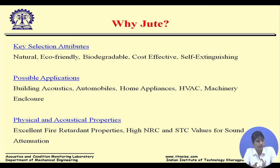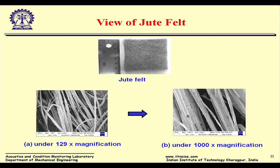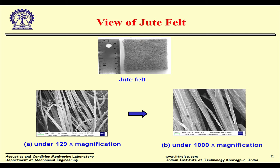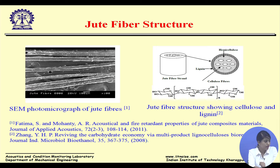Jute has potential applications in building acoustics, automobiles, home appliances, HVAC, and machinery enclosures. This is a view of the jute field. Under scanning electron microscopy at 129x magnification, you can see the fibers are randomly oriented and irregular. At 1000x magnification, these fine irregular fibers resemble fiberglass. Inside the fiber strand, the outer part is lignin from wood fibers, with cellulose and hemicellulose inside.